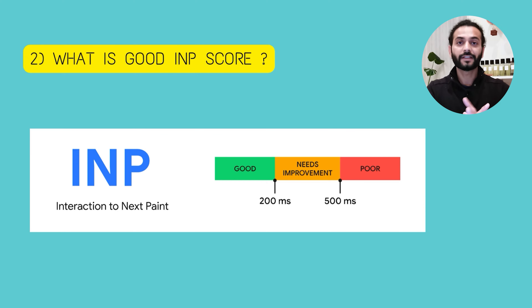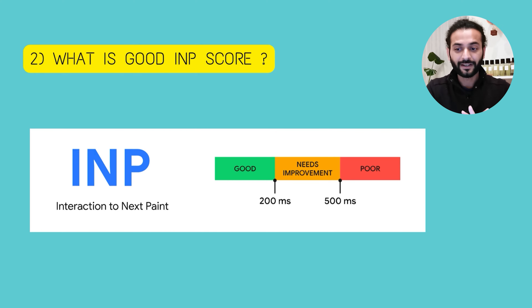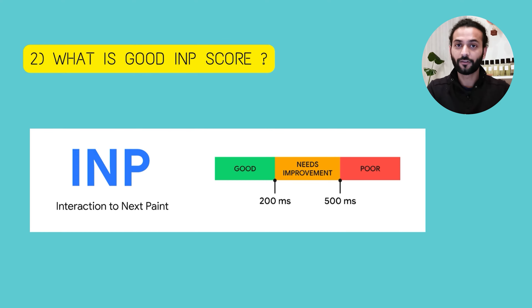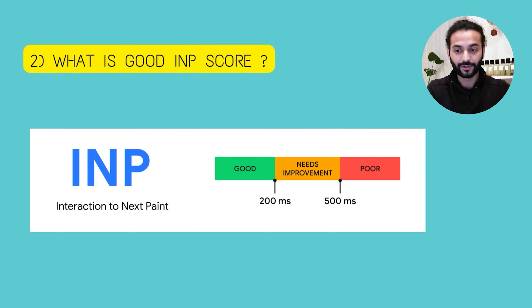Now you know what INP is. Let's see what a good INP score looks like. Interaction to Next Paint should be below 200 milliseconds. If it's more than 200 milliseconds, your website is going to fail for INP metrics.